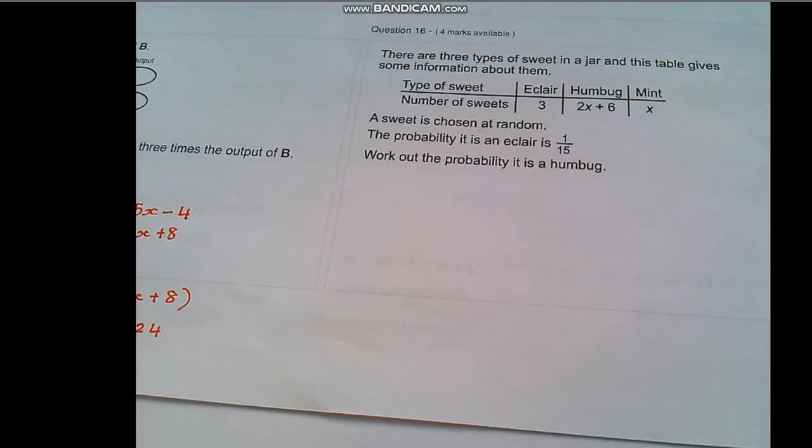Hi again everybody. So I'm now going to have a look at question 16. There are three types of sweet in a jar and this table gives you some information about them. You're given that a sweet is chosen at random and the probability it is an eclair is 1 out of 15.